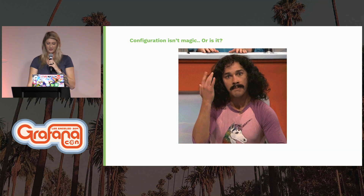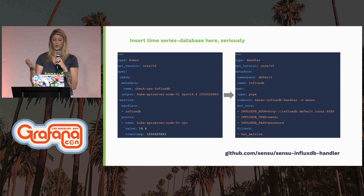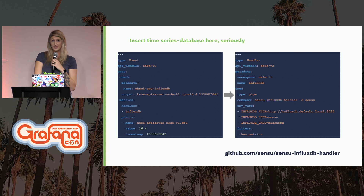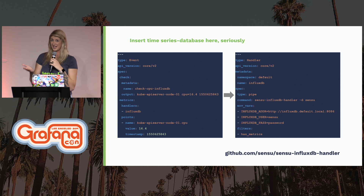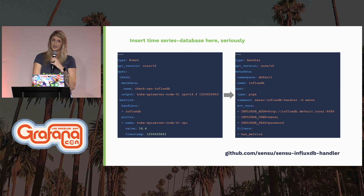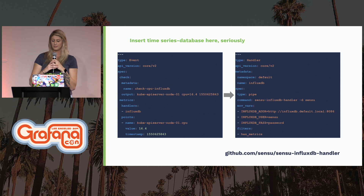Now that we have a collection of metric points within a Sensu event, what do we do with it? Sensu has tight integrations with many time series databases, so you can just pick one. I accidentally wrote an InfluxDB handler because Influx has a super simple Golang client — Go is my language of choice — and contributing to our open source plug-ins is actually that easy. This was previously an enterprise feature, so take advantage of it. The handler configuration on the right of the screen takes that event data and invokes the Go binary called Sensu InfluxDB handler. This accepts configuration options as either command line flags or environment variables. Additional metric tag enrichment can happen as part of the Sensu event pipeline, and the metrics are then sent off to the configured time series database.